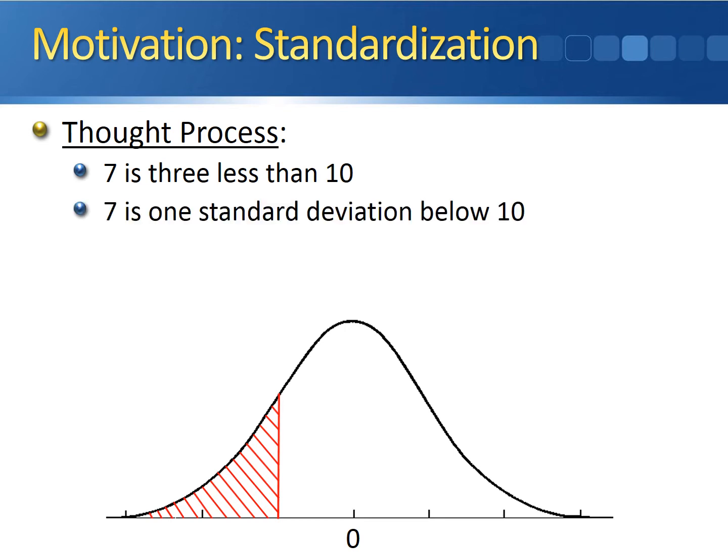Since the standard deviation of our original normal distribution was three, what this means is that seven is exactly one standard deviation below ten. So in the end, x equal to seven is equivalent to z equal to negative one — seven is one standard deviation below ten.